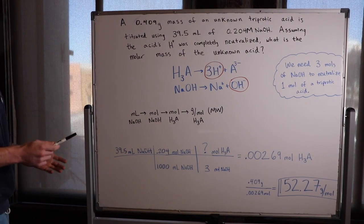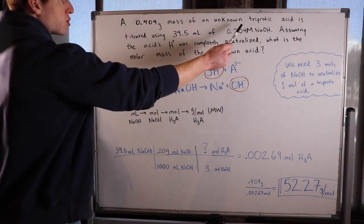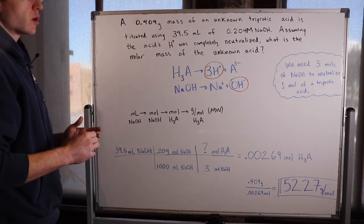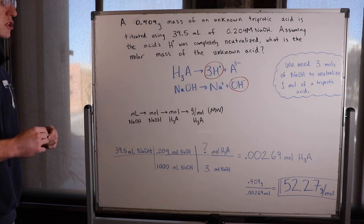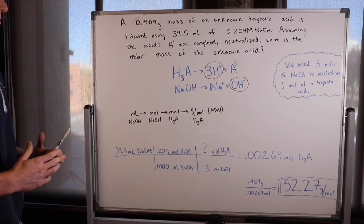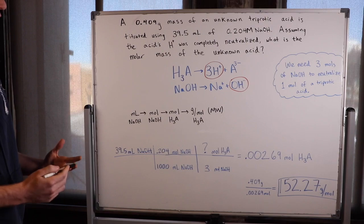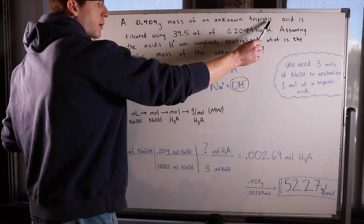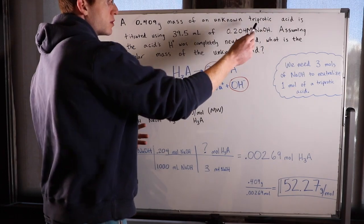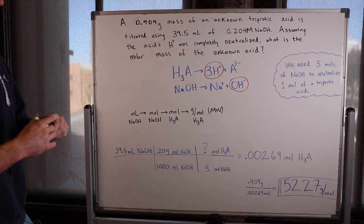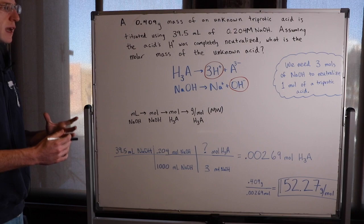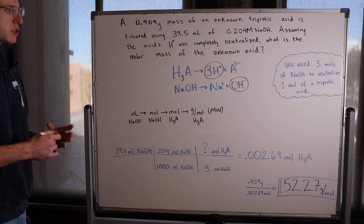This next acid-base neutralization problem says a 0.409 gram mass of an unknown tri-protic acid is titrated using 39.5 milliliters of 0.204 molar NaOH, or sodium hydroxide. Assuming the acid's H+ was completely neutralized, what is the molar mass of the unknown acid? Tri-protic means an acid that can donate three protons — tri means three, protic means dealing with protons. Titrated is another word for neutralization; it's a technical process chemists use to determine unknown concentrations.